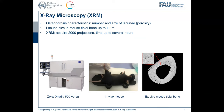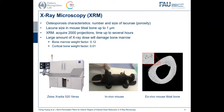However, it has to acquire more than 2,000 projections and the acquisition time is up to several hours — for example, more than six hours. Therefore, the large amount of X-ray dose will damage bone marrow because the bone marrow is very sensitive to X-ray dose. Its weighting factor is about 12 times that for cortical bone tissue.